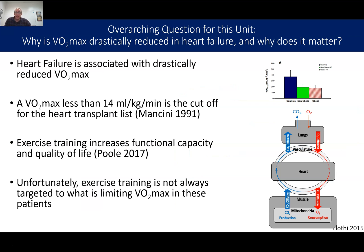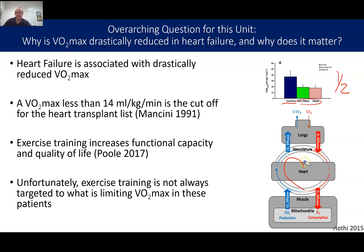Heart failure patients have a very low VO2max. Here, from a study, you can see the VO2max of healthy controls of the same age compared to obese and non-obese heart failure patients. Their VO2max is cut about in half — much lower — which means their exercise capacity is going to be way lower. Why is that? What's going on? Clearly, by the name 'heart failure,' something is happening at the heart, but what is it and why does it result in a decreased VO2max? We'll talk about that this unit.